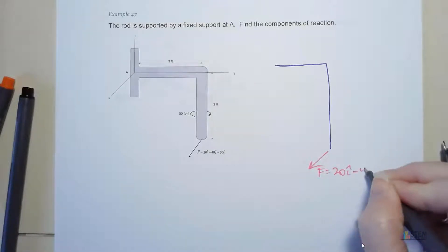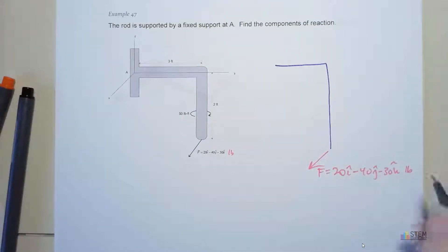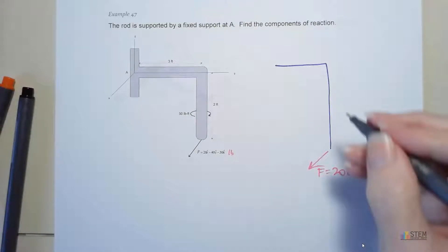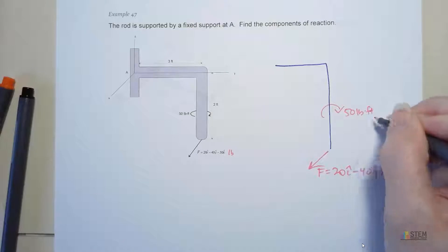We've got this force vector. Let's put that on here. So 20i minus 40j minus 30k. And I didn't have any units on this, but that's pounds. And then we've got this 50 pound foot-pound couple moment right here.